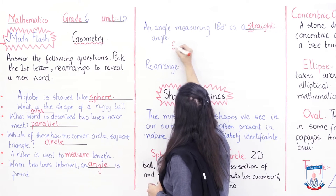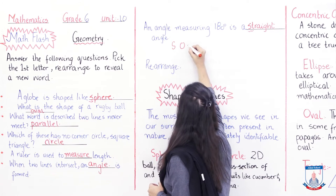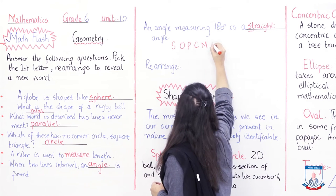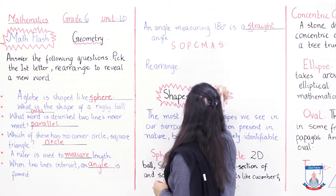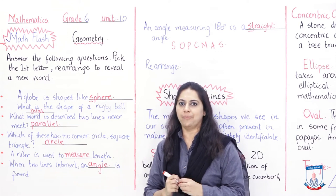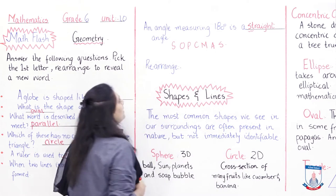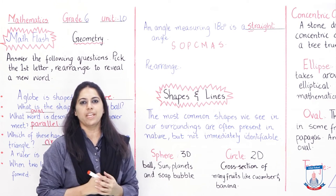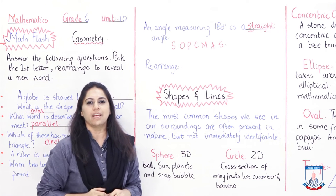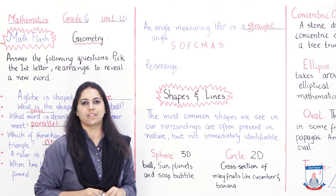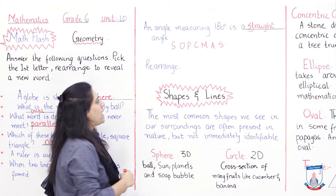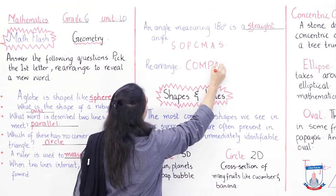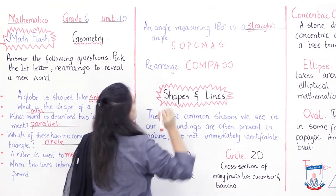So we have all the initials: S, O, P, C, M, A, S. Now students, rearrange these letters to find the word. Please pause the video and try. The answer is COMPASS - C, O, M, P, A, S, S. Compass is an instrument found in your geometry box.